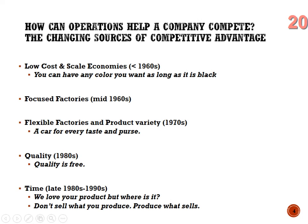In the 1960s you could have any color as long as it's black. Then we moved to focused factories in the mid-60s, flexible factories and product variety in the 70s — a car for every taste and purse. In the 80s we moved into the quality movement: 'quality is free.' In the late 80s and 90s: 'don't sell what you produce, produce what sells' — making that transition toward lean flow.